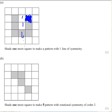B, shade one more square to make a pattern with rotational symmetry of order two. What that means is I want to be able to put my pencil or a point in there and spin it around.